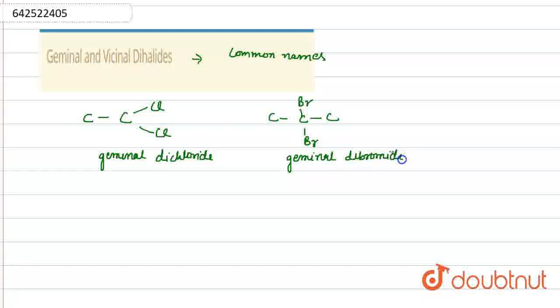But when we name according to the IUPAC nomenclature, then its IUPAC name will be 1,1-Dichloroethane. And in the second case, it will be 2,2-Dibromopropane.